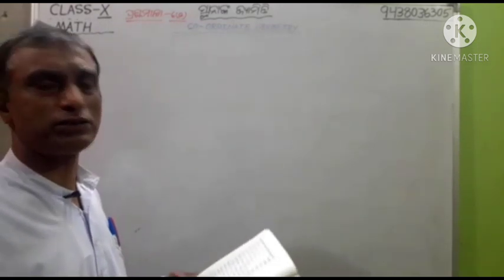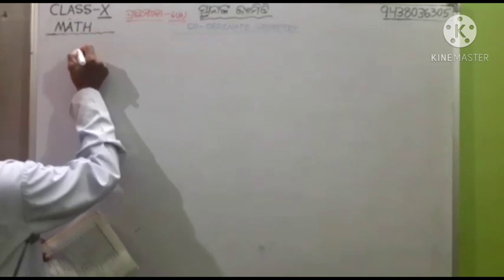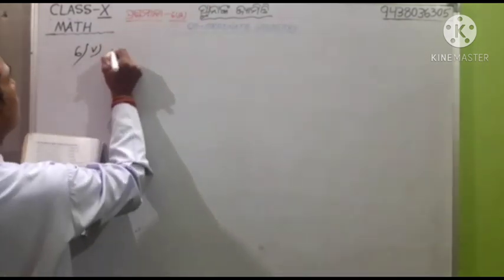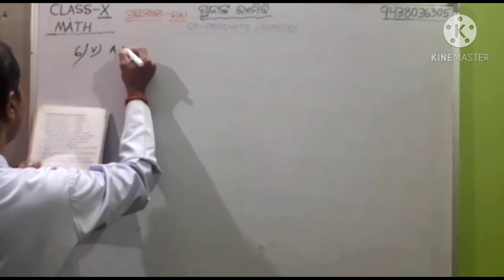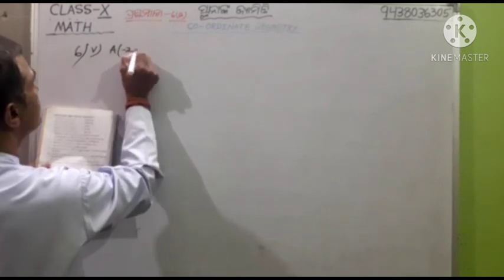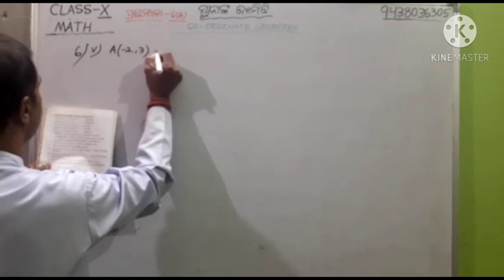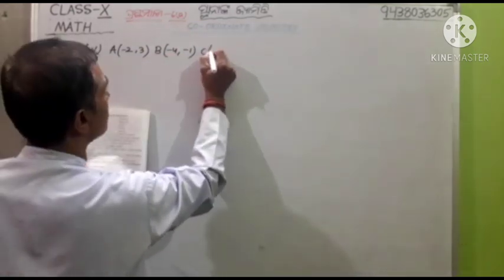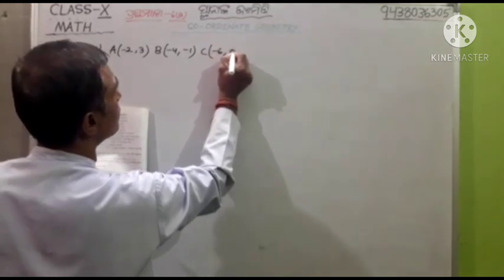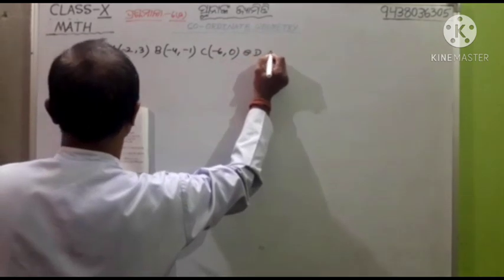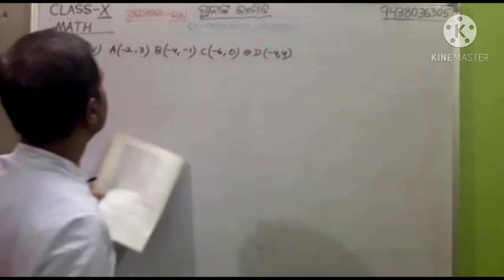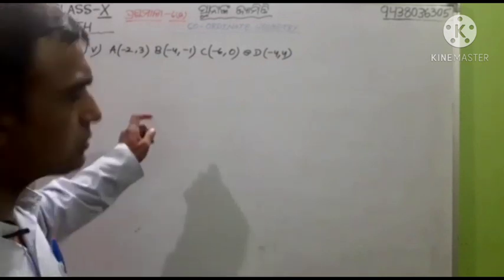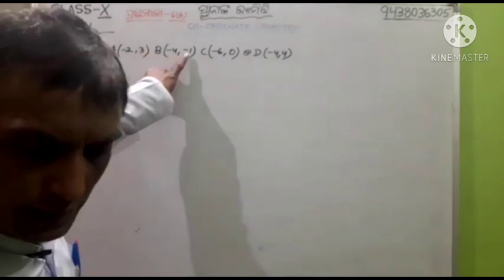Then you will have a clear letter here. Then you will have to write a letter. 6th number T. 6th number B. I will write: A: minus 2, 3. B: minus 2, 3. B: minus 2, 3. Minus 4, minus 1. C: minus 6, 0. D: minus 4 and 4.